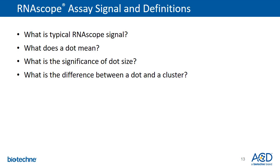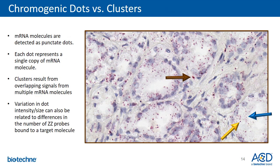Oftentimes we have customers asking questions such as: what is typical RNAscope signal, what does a dot mean, does the dot size really matter, and why do I sometimes see a cluster versus a dot? In this image, where RNAscope chromogenic red assay was performed, signal appears as numerous punctate red dots of different sizes and intensities and a few clusters. It is the number of dots and clusters that are important for signal quantification, rather than the size or intensity of the dot. Each punctate dot equals one mRNA molecule — either a small dot or a larger round dot represents one mRNA molecule.